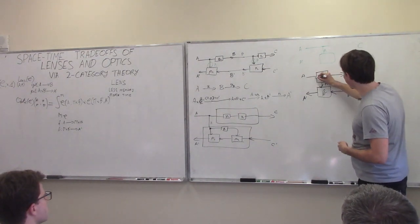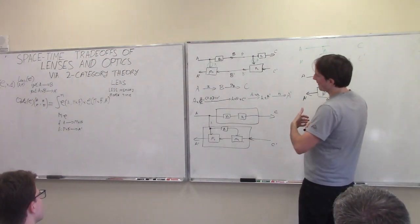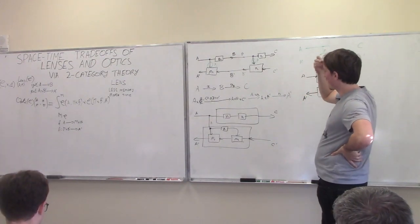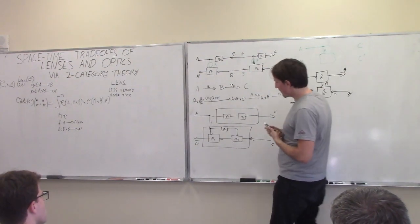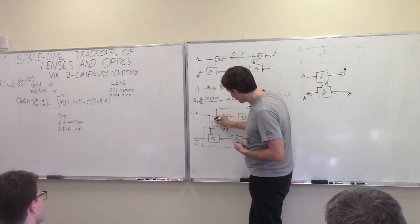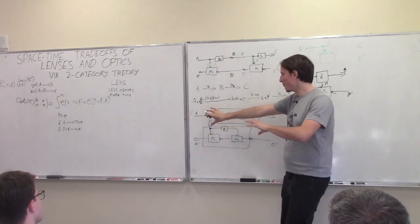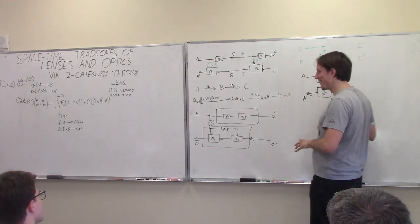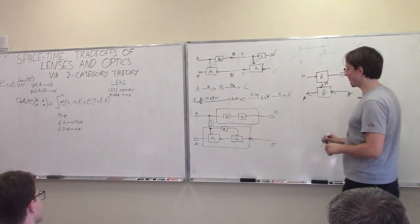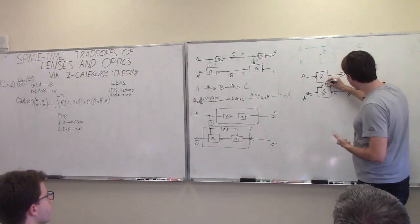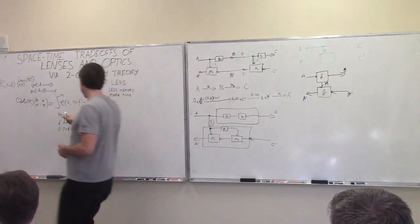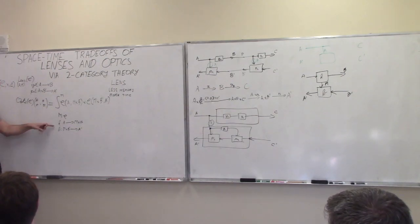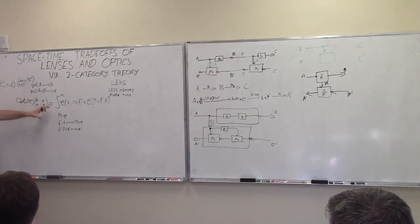With lenses, everything we can save is constrained — the internal state is always equal to A, so no matter how many lenses we compose, if there were a million of them, we would still have to save A and recompute everything in the backward pass. In optics, we say: this is a freedom we now have to choose this internal state to our liking. An optic consists of these three things: we choose an M, choose the forward pass using M, and a backward pass using M. You can write it as a Sigma type — it's a coend.